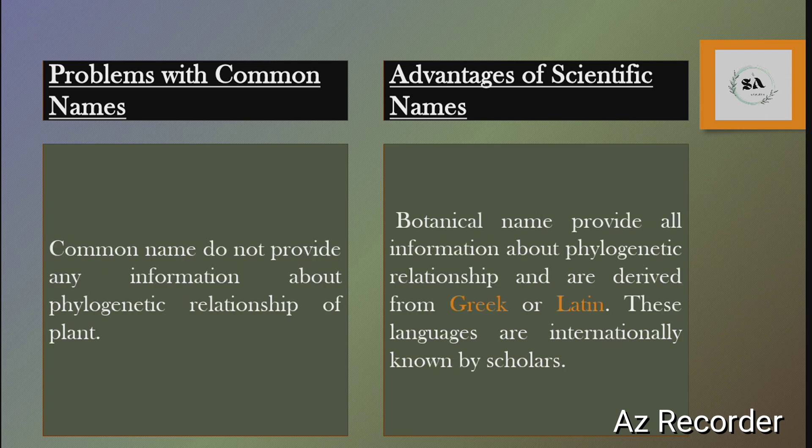The next problem with common names is that they do not provide any information about the phylogenetic relationship of plants. But scientific names provide all information about phylogenetic relationships and tell about the plant's biography. These scientific names are derived from Greek or Latin language, and both these languages are internationally known by scholars.